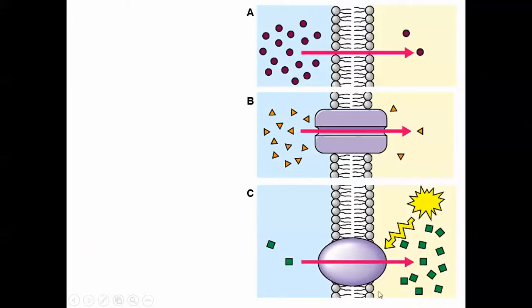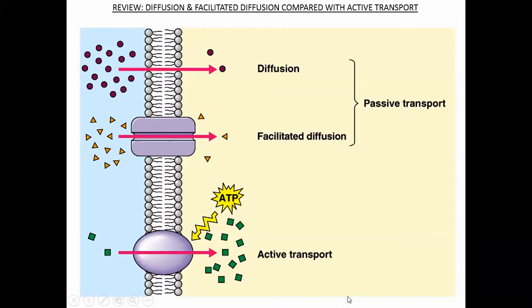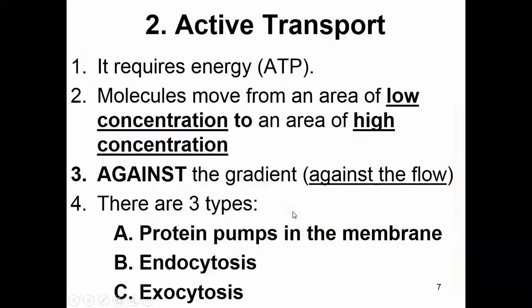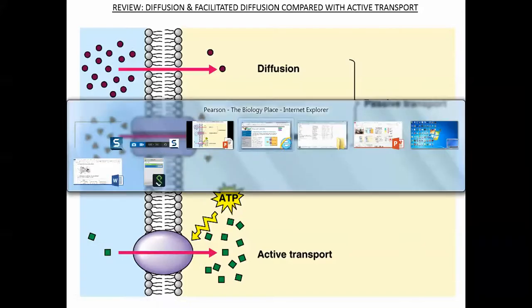We're going to look at these scenarios - going against the concentration gradient or with it, whether molecules can diffuse through directly, osmosis for water, facilitated diffusion using a protein channel, or active transport using a protein channel and going against the concentration gradient.